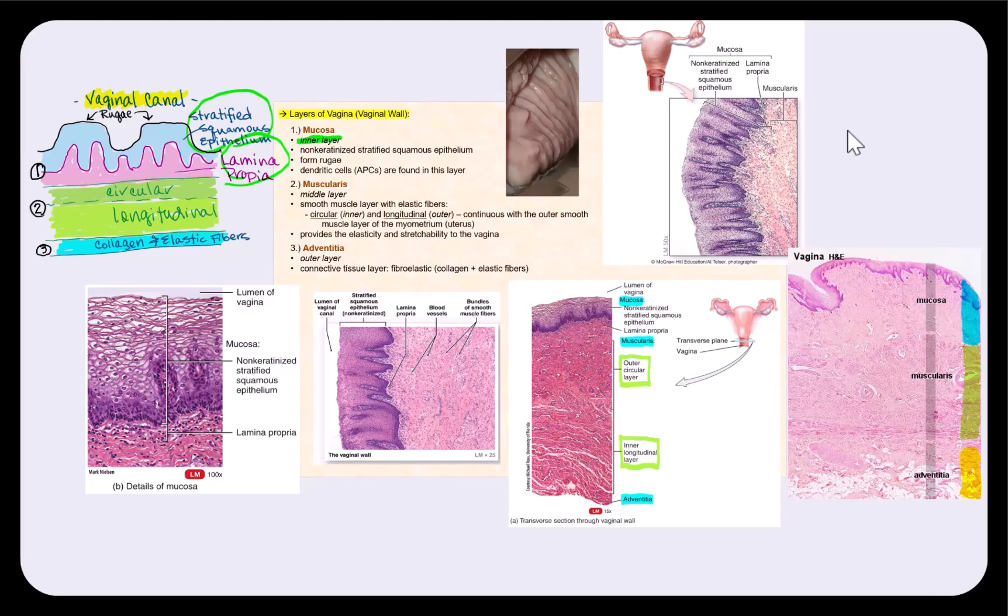Then we move to the middle layer, which is the muscularis. And this is the usual smooth muscle layer. We have the inner circularly arranged smooth muscle and the outer longitudinally arranged smooth muscle. It turns out this longitudinally arranged smooth muscle will continue on to form the myometrium of the uterus.